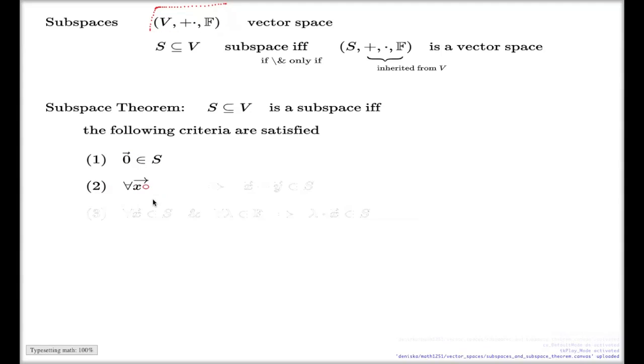Second one, if you have two elements of the subset, then by adding these two elements you will end up in the subset again. So S is closed on the addition. That's the informal interpretation of this second criterion.